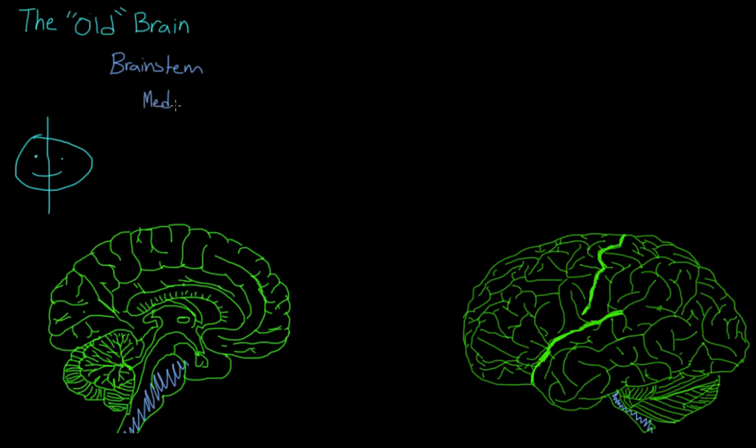The brain stem is split into two parts. One is called the medulla, and the other is referred to as the pons. The medulla is this area that's right here, and this area right here is called the pons. The brain stem controls really basic functions, things like heartbeat and breathing.